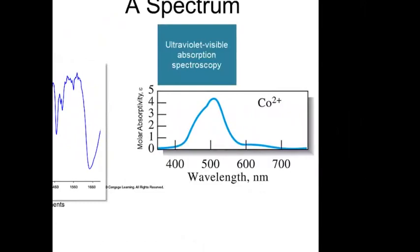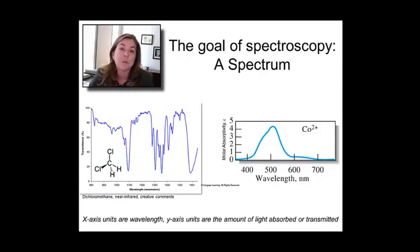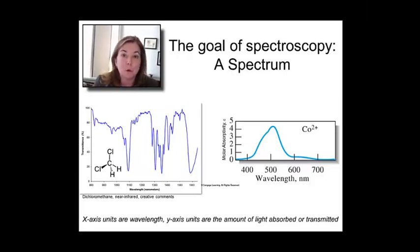And now we have molar absorptivity as our y-axis. So in infrared, you typically use transmittance on the y-axis. And on UV-Vis, you'll use molar absorptivity, both of which we'll define in today's lecture and the next. So remember, the x-axis of the spectra is going to be the wavelength, and the y-axis is going to be how much was absorbed.